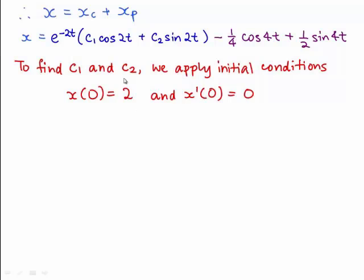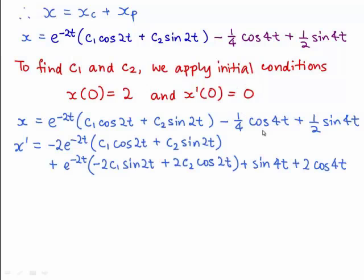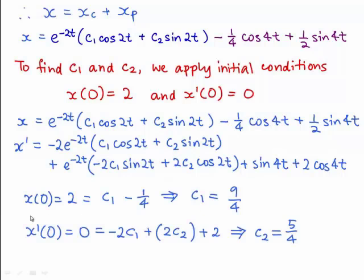So using these initial conditions, we can substitute t equals to 0 into x and x prime to find the unknowns c1 and c2. In this case, working out the values of c1 and c2, we find that c1 is equals to 9 over 4 and c2 is 5 over 4.